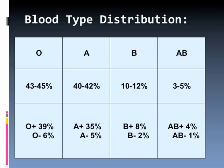Here's a quick chart of blood type distribution, to give you an indication of which blood types are most and least common. Looking at the chart, the majority of the population — almost 50% — falls under O and A, which are very close. 43% to 45% of people have blood type O, 40% to 42% have type A, 10% to 12% have type B, and the rarest is AB at 3% to 5%.